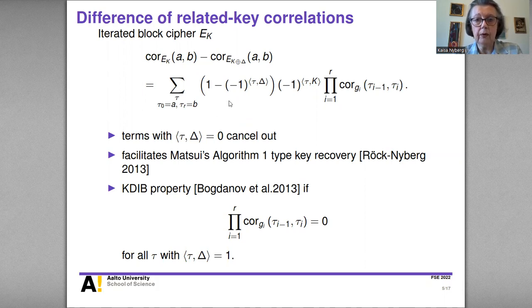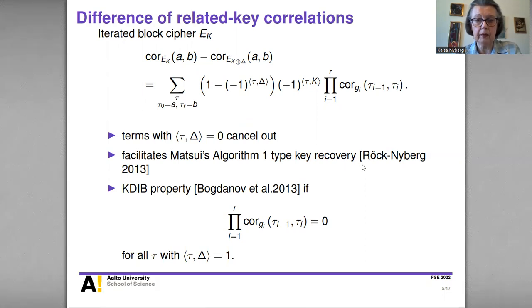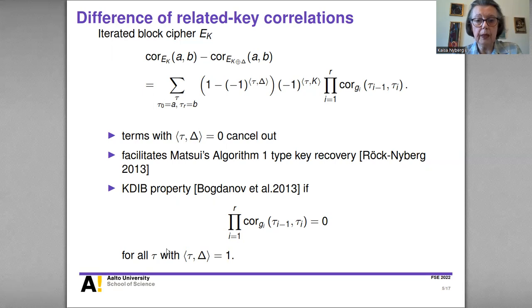This means there are fewer terms in the sum and fewer possible values for the sum. These facts may facilitate Matsui's Algorithm 1 type key recovery, as discussed in the paper by Röck and Nyberg in 2013. A second possibility is the special case where all remaining trail correlations with the inner product between tau and delta equal to one disappear. These are the two main applications previously handled in the literature.